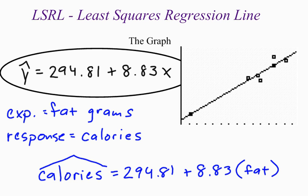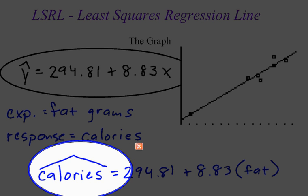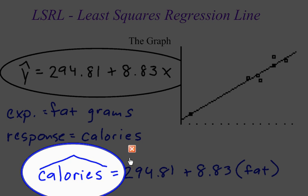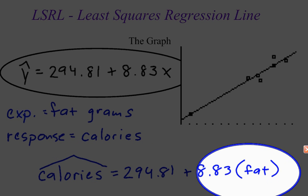So basically what this does, this is another way to write your least squared regression line equation, and it gives you just a little bit more context to your problem. It shows you the actual variable that you're using as your response variable. It shows you the variable that you're using for your explanatory variable.